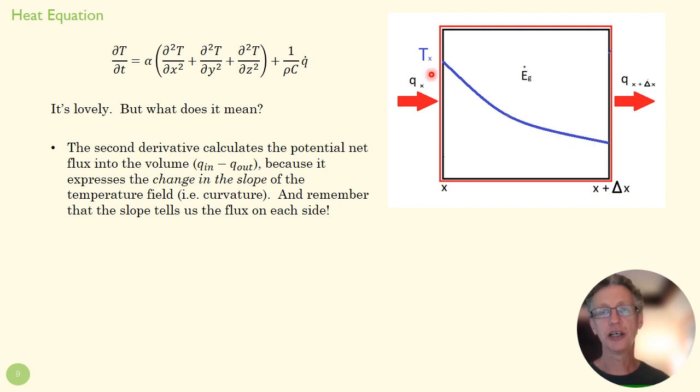Why does the curvature of that line matter? Because the slope on each side tells us how much flux is going out that side. So here we have a high dT/dx—that would mean I'd be getting a lot of flux through here—and a low slope over here, so less flux headed out in that direction on the right side.